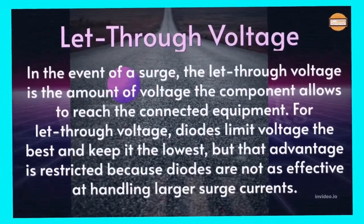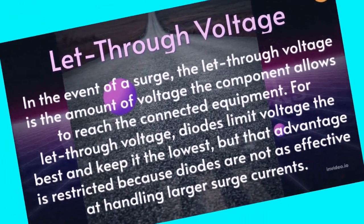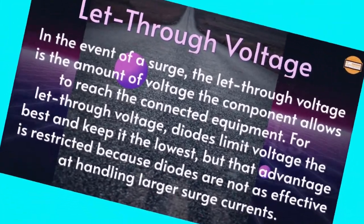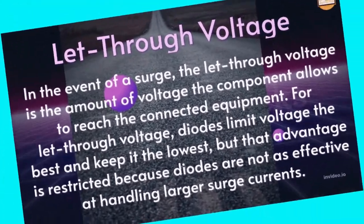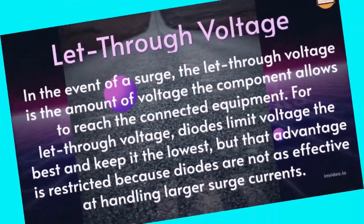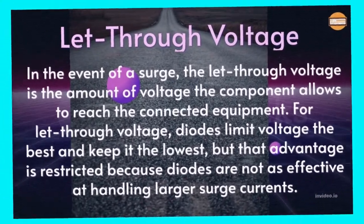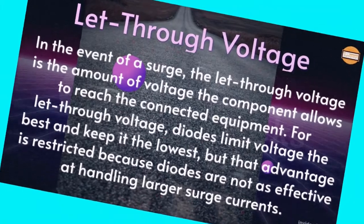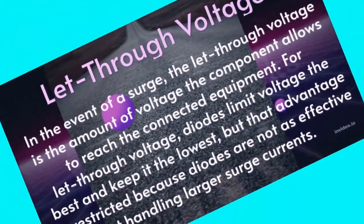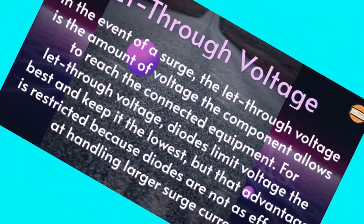Let-through voltage: in the event of a surge, the let-through voltage is the amount of voltage the component allows to reach the connected equipment. Diodes limit voltage the best and keep it the lowest, but that advantage is restricted because diodes are not as effective at handling larger surge currents.